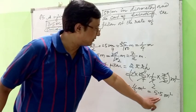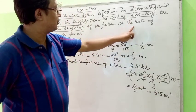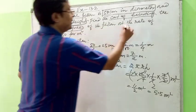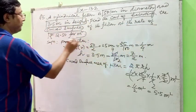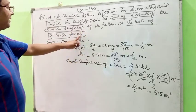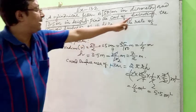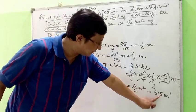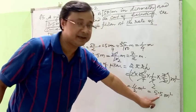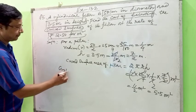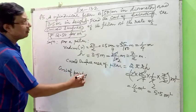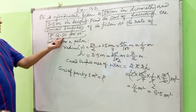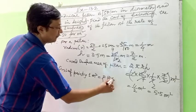Now we are going to paint this area of 5.5 square meters. The cost of painting is at the rate of rupees 12.50 per square meter, meaning every 1 square meter costs rupees 12.50. So the cost of painting will be multiplied: 12.50 into 5.5.